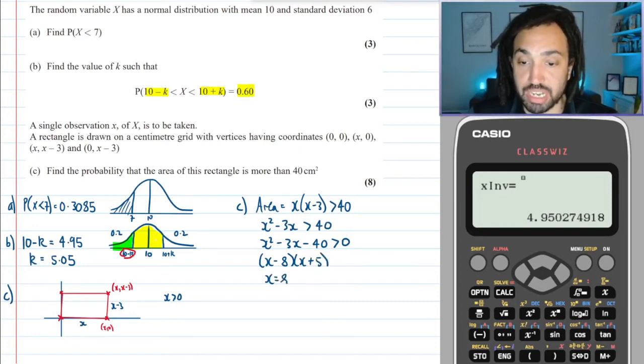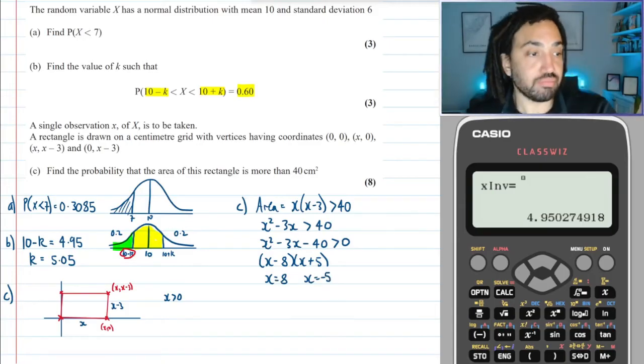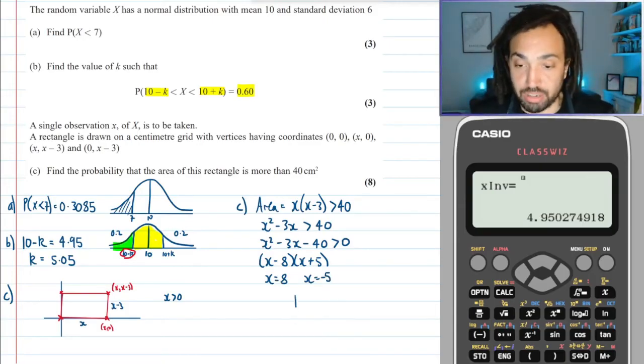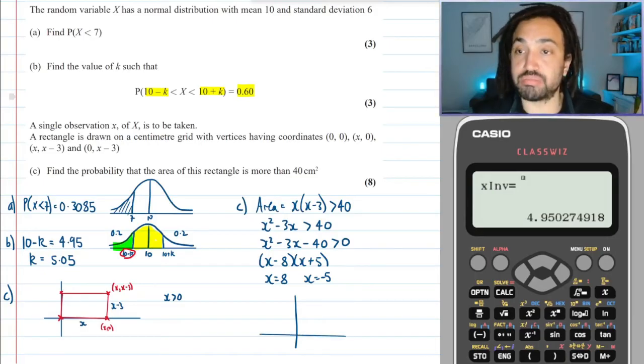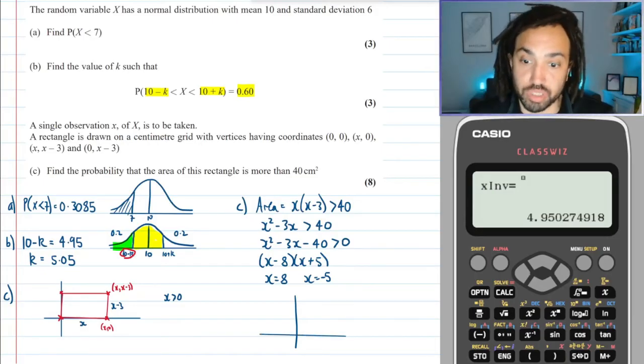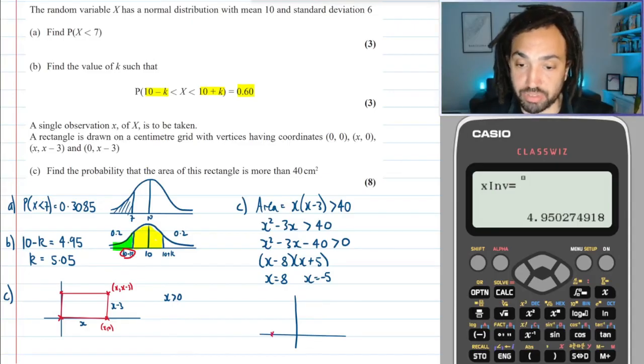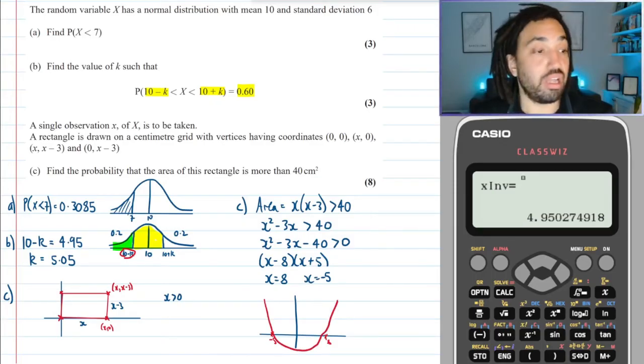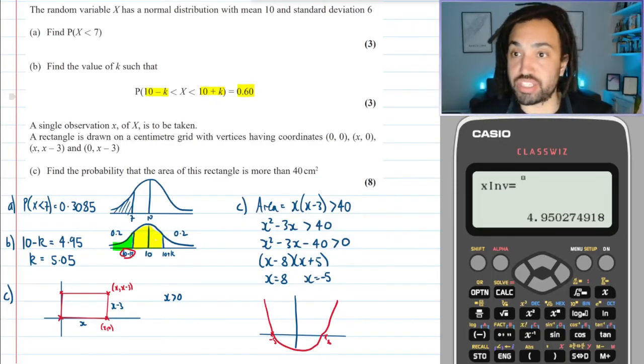I can solve it by factorizing first, and I get (x - 8)(x + 5) > 0. This tells me the critical points are at 8 and -5. Now if we remember from GCSE, if I'm solving a quadratic inequality, I might want to give a sketch of the quadratic first.